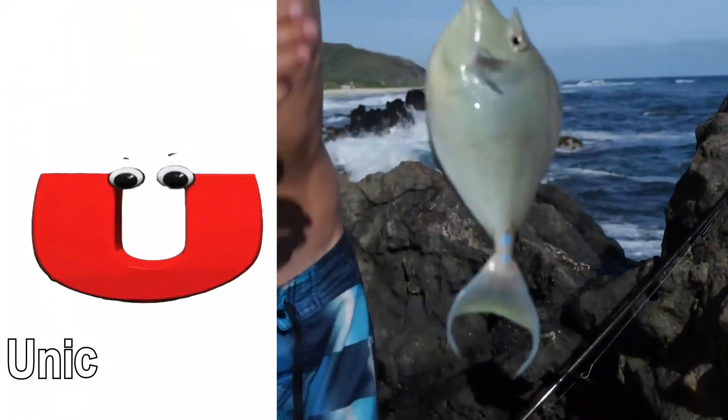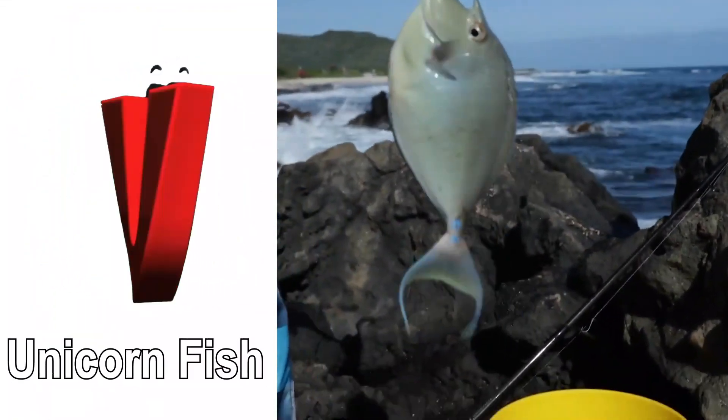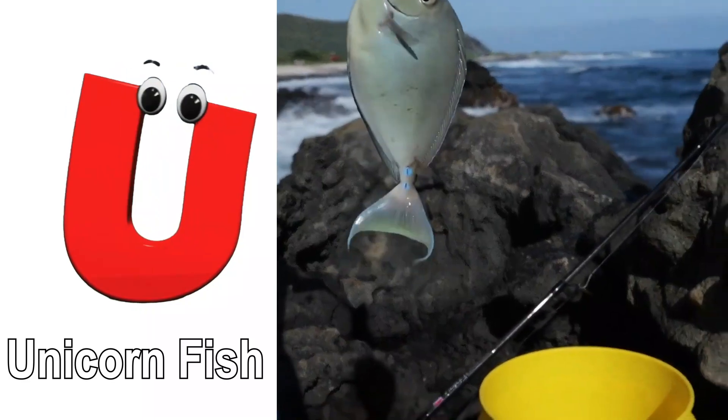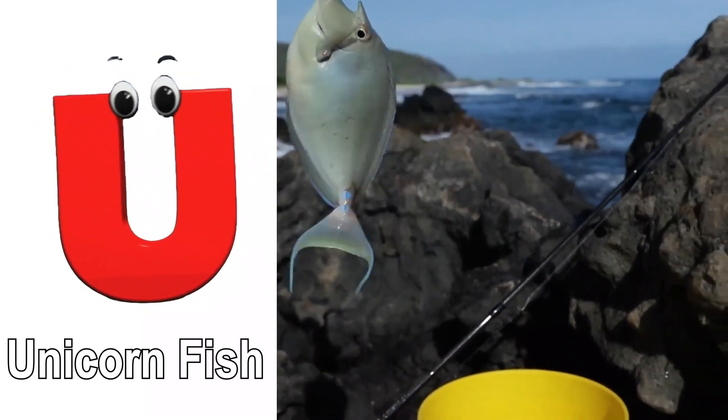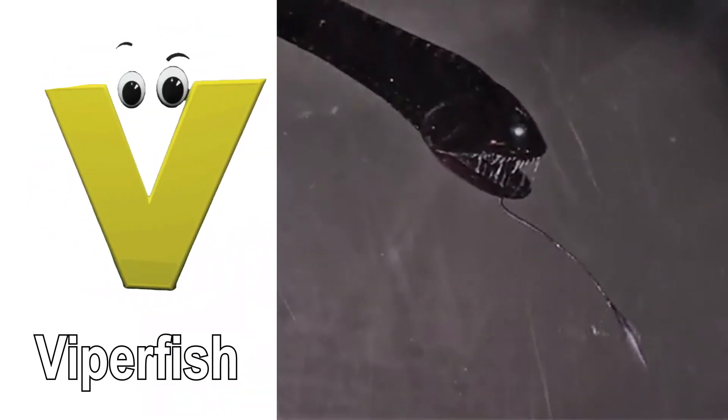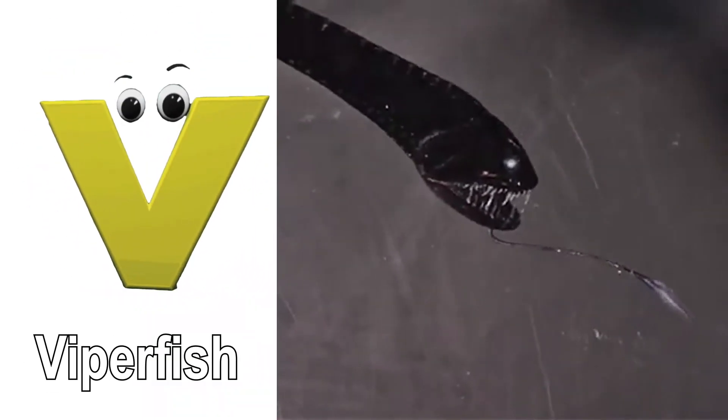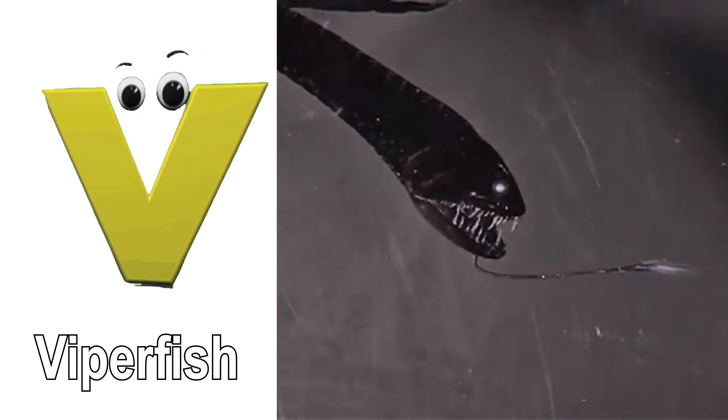U is for unicorn fish. Uh, uh, unicorn fish. V is for viperfish. V, v, viperfish.